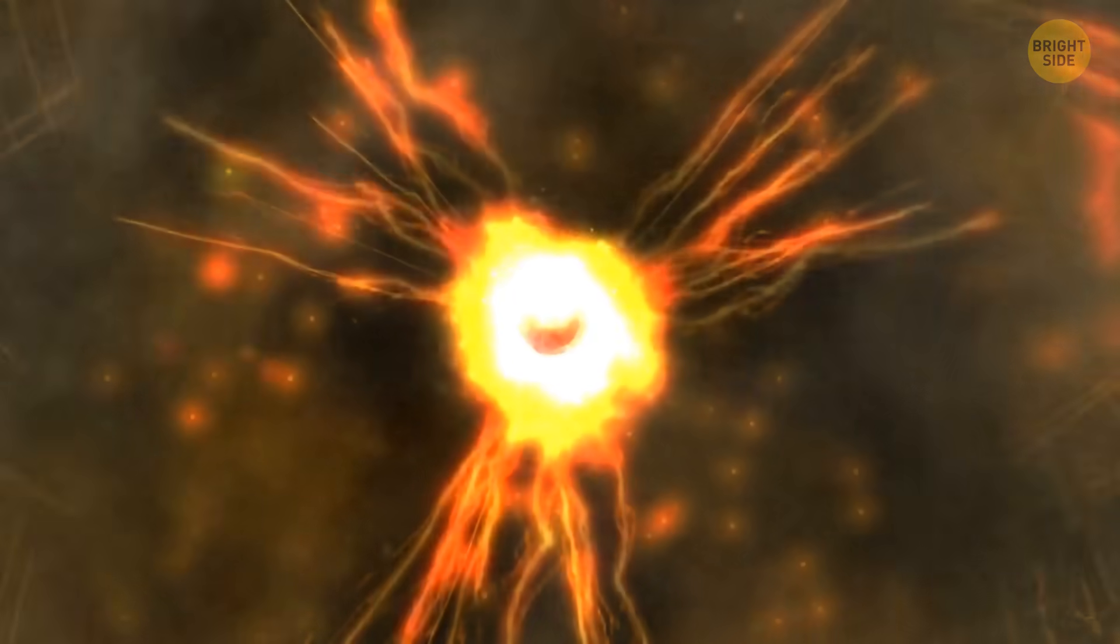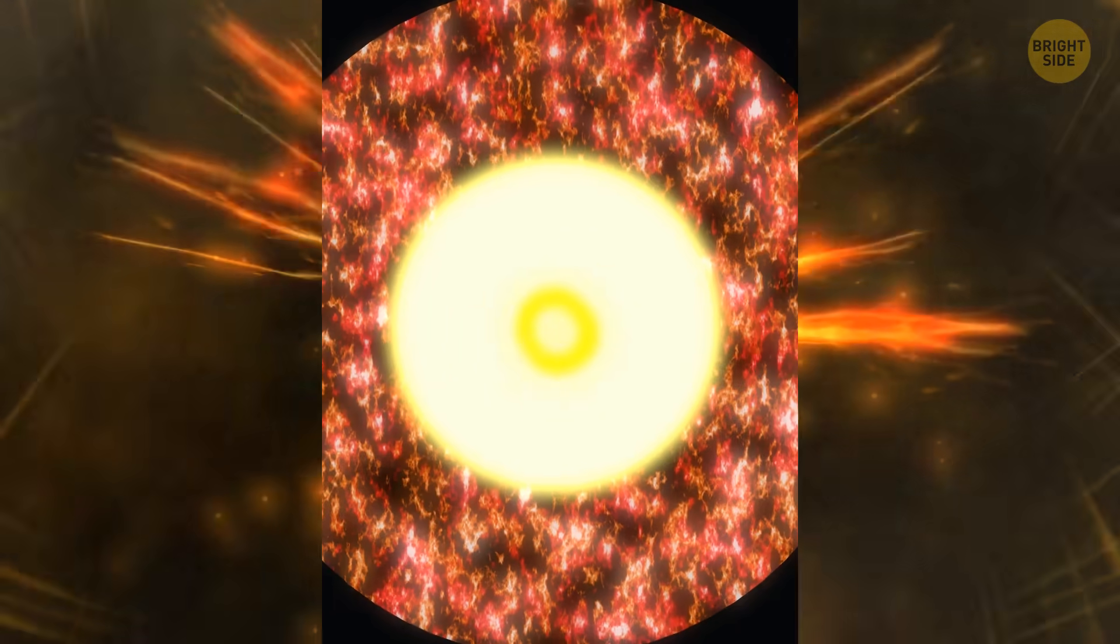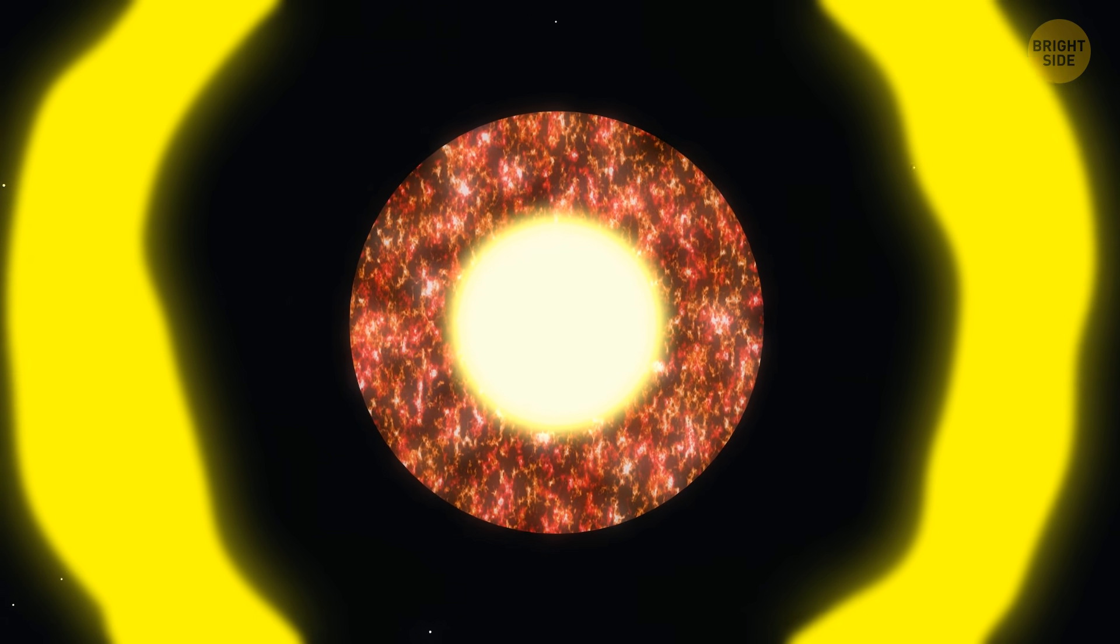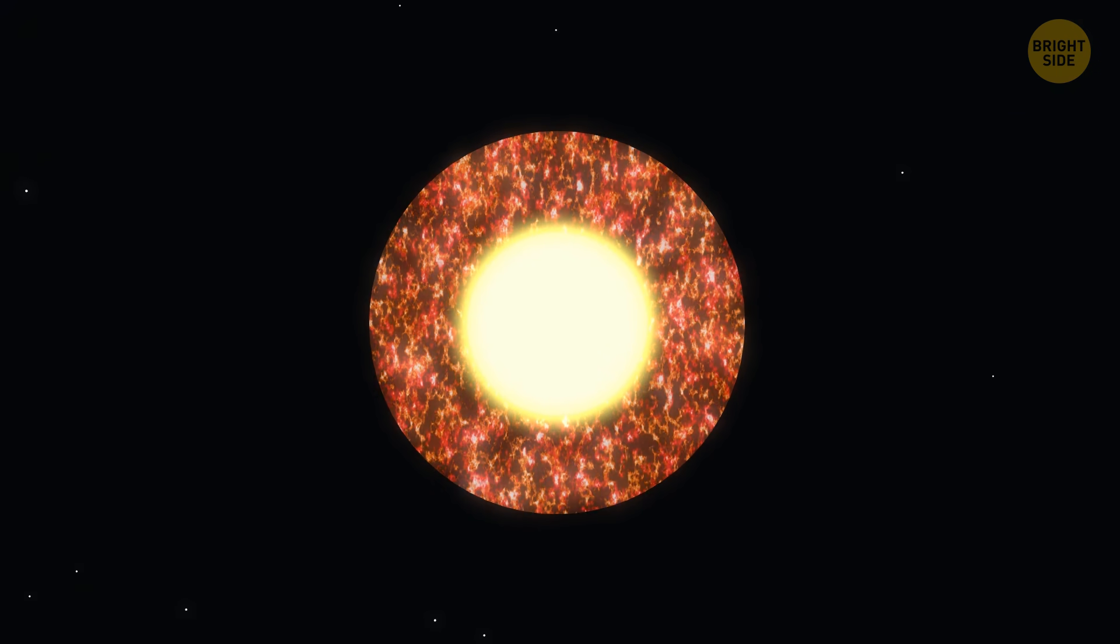gets absorbed, and re-emitted by other particles. Eventually, after a long time, it reaches the sun's surface and zooms off into space, reaching us as sunlight.